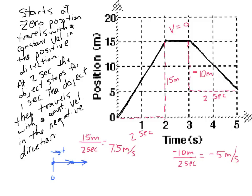That happens for a couple of seconds. Now, after a couple of seconds have passed, we have a zero velocity — no motion is happening here. The position is not changing for a period of one second. In a motion map, we indicate that by simply having a dot and no arrow, because the arrow indicates velocity. A dot indicates there is no velocity during that third second. Then we look at the third segment and see a negative slope, meaning a negative velocity — not in the positive direction anymore, but in the negative direction. We indicate that by drawing arrows to the left.